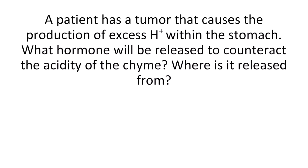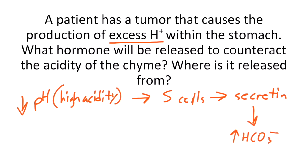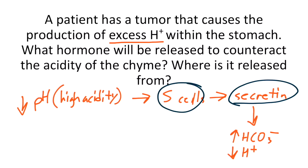A patient has a tumor that causes the production of excess acid within the stomach. What hormone will be released to counteract the acidity of the chyme, and where is it released from? The acidic chyme enters the duodenum, and the low pH is sensed by the S cells, which are stimulated to secrete secretin. Secretin then causes the release of bicarb from the pancreas and decreases acid production from the parietal cells. So the answer is secretin, released from the S cells.